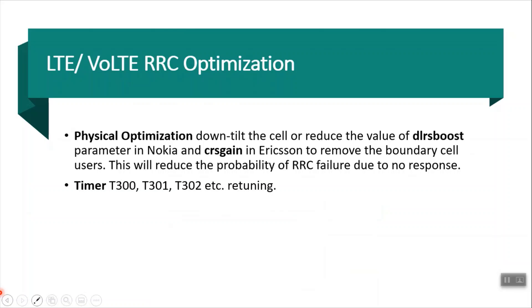To overcome this problem, we have to again do physical optimization — exclude the users who are at the cell boundary by changing the down tilt or by changing the DLRS boost or CRS gain parameters. If that does not help, then there are timers T300, T301, and T302 whose values we can retune to improve this KPI.